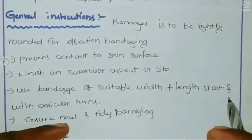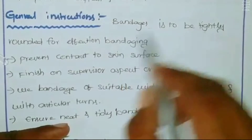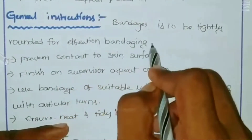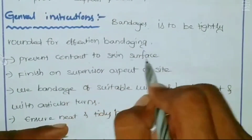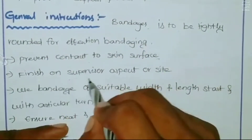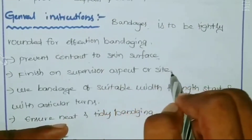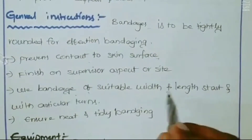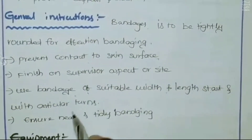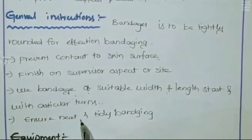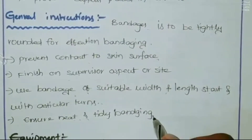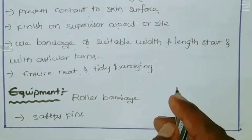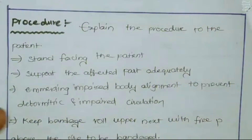Some general instructions before bandaging: the bandage is to be tightly and neatly rounded for effective bandaging. Prevent contact to the skin surface. Finish at the superior aspect of the site. Use a bandage of suitable width and length. Start with circular turns. Ensure neat and safe bandaging. Equipment needed: roller bandage and safety pins.